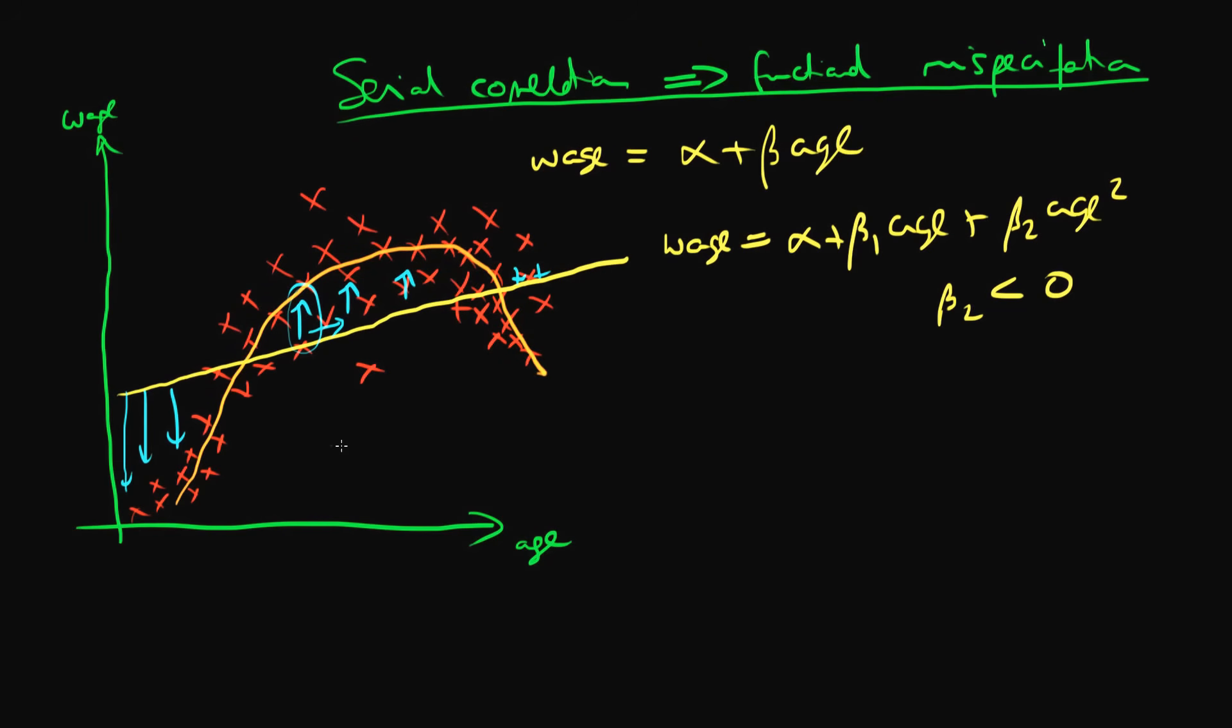So it's not fitting the data perfectly, but by specifying a more correct model that has enabled us to get rid of this serial correlation.